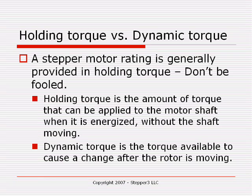Dynamic torque is the torque available to cause a change in motion after the rotor is moving. For example, with a gantry router table using a 400 ounce-inch stepper motor on the x-axis, when the table is not moving, you can apply a force equivalent to 400 ounce-inches without moving that gantry.